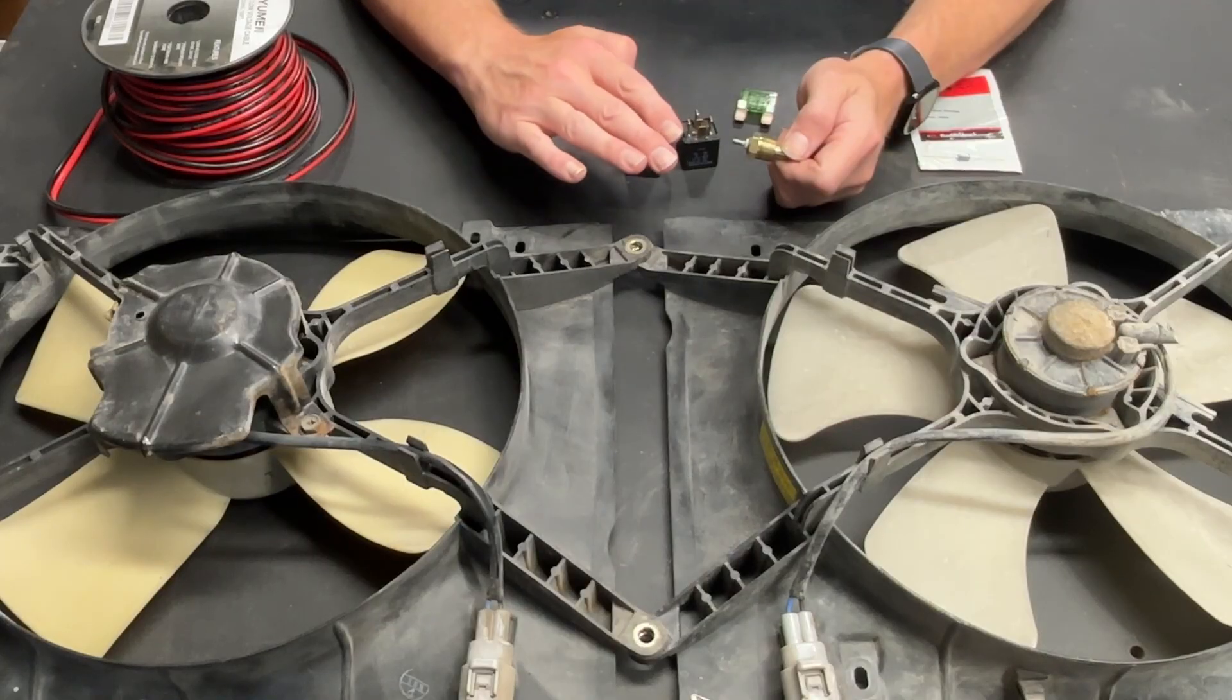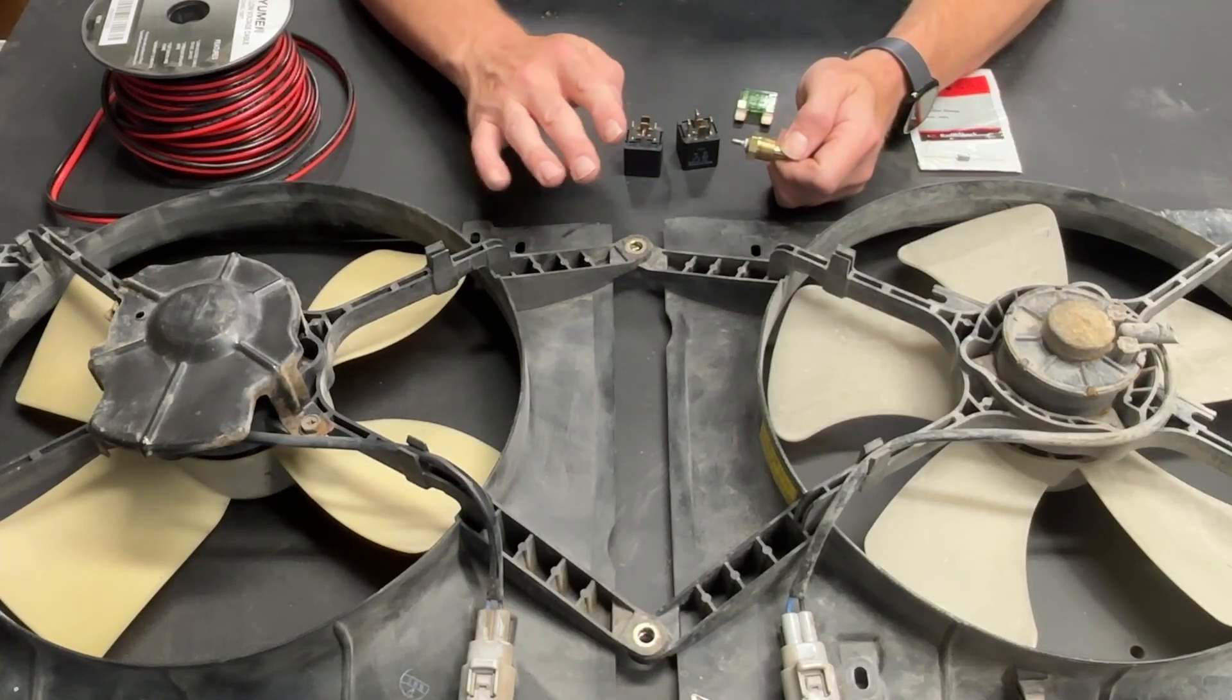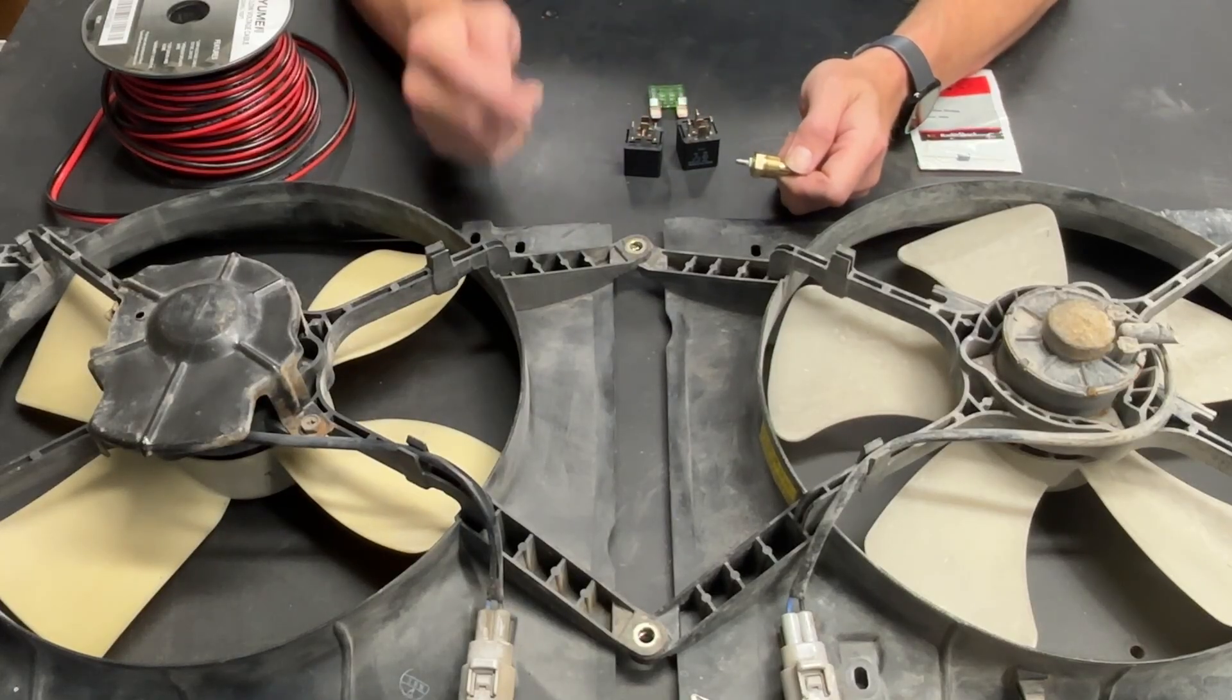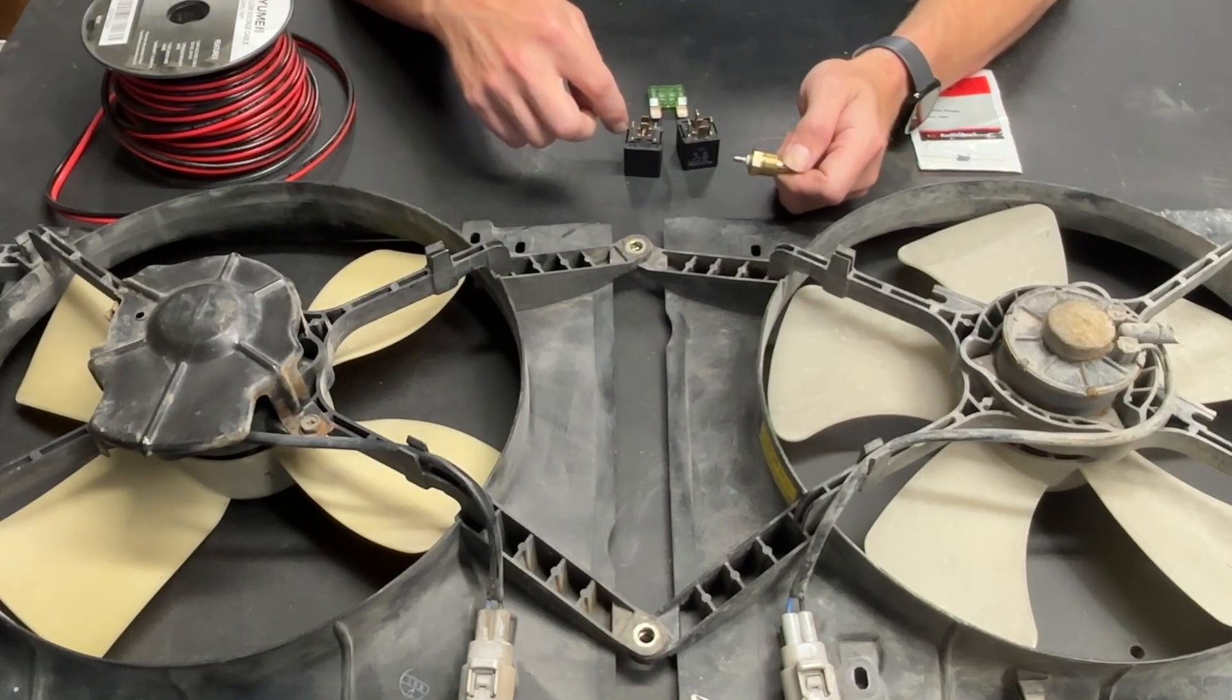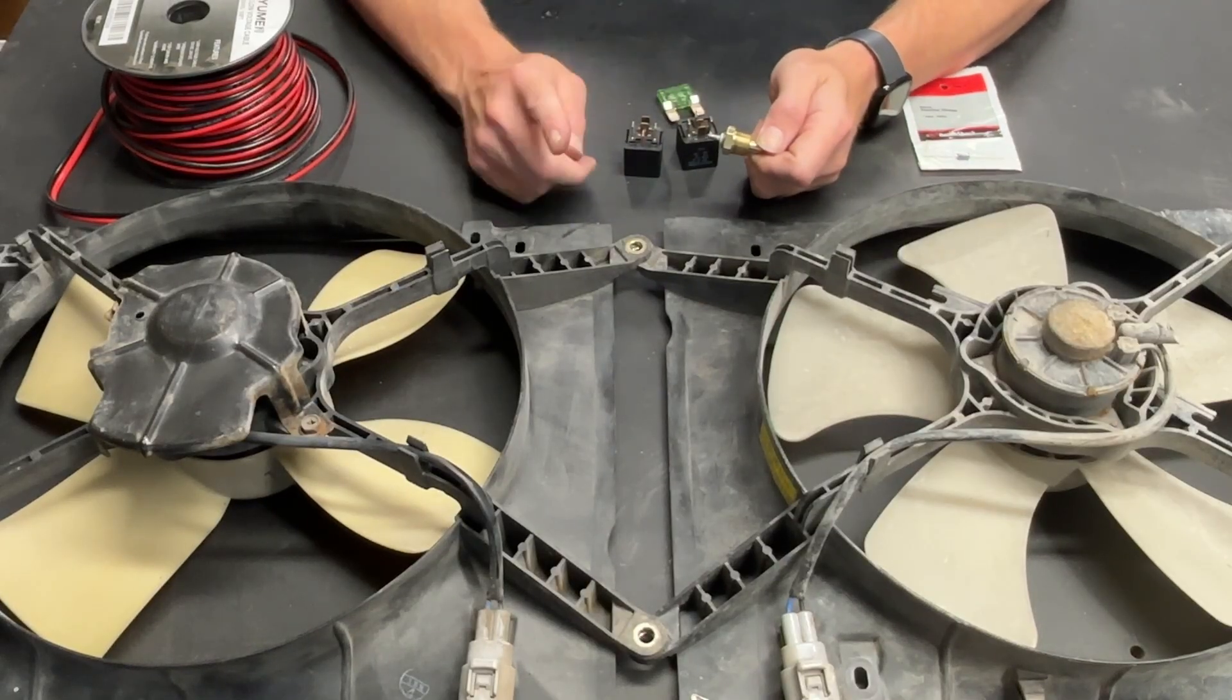If you want to do it quick and easy and you're not worried about anything else, you can get away with your fan or fans, one relay per fan, a fuse, and a thermal switch. However, if you want to do it right, you really need to put a diode across the leads coming off the fan.